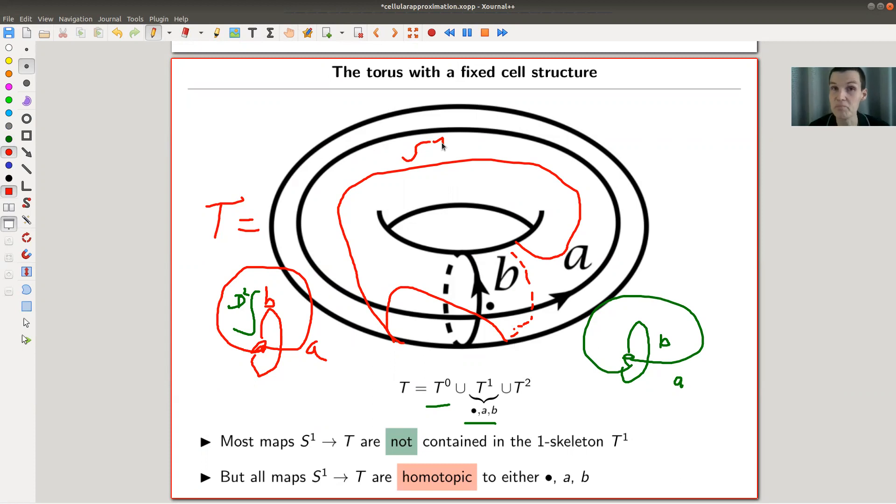So here's a map from S^1 into T which is certainly anything but contained in the one skeleton—goes around like this. It just goes around something crazy. It's an S^1 in my torus and it just goes around like crazy. Certainly most maps will not be contained in the one skeleton.